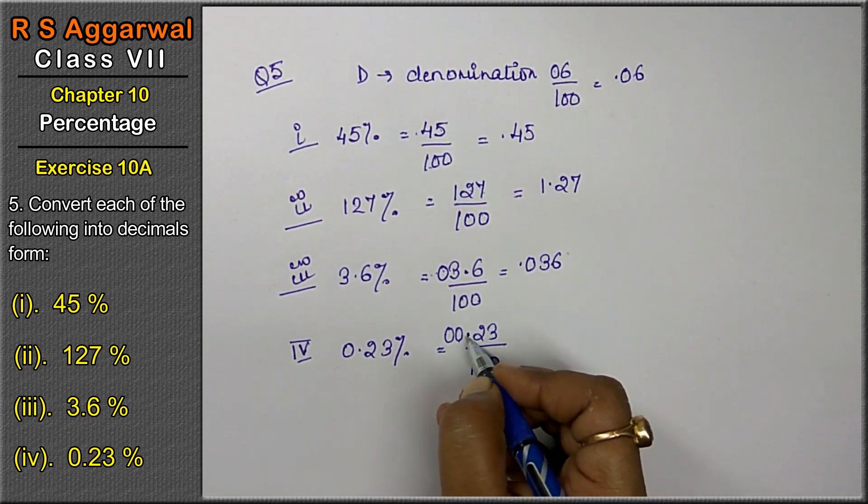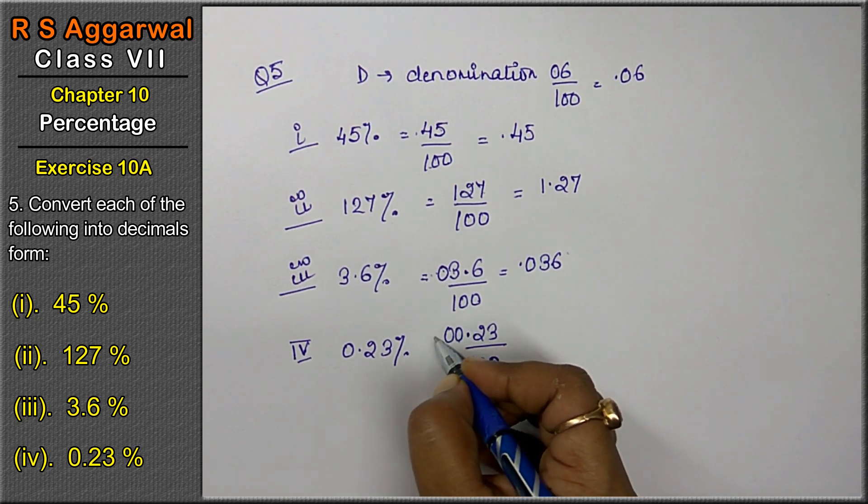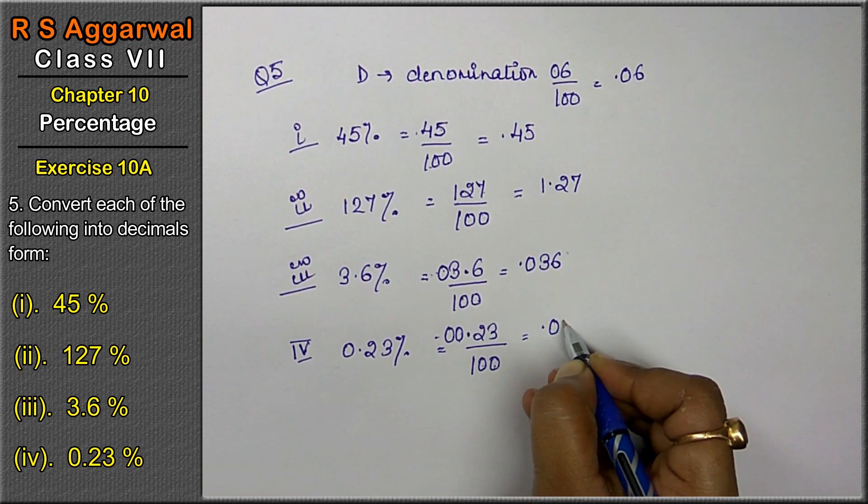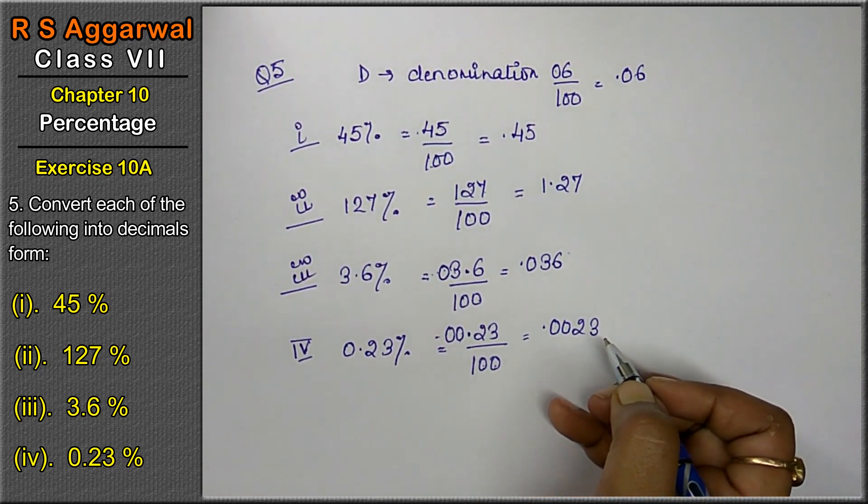So that means 2 zeros, 2 zeros means after 2, before the 2, the point will come, that means 0.0023 will be the answer.